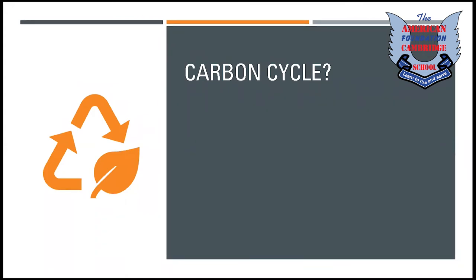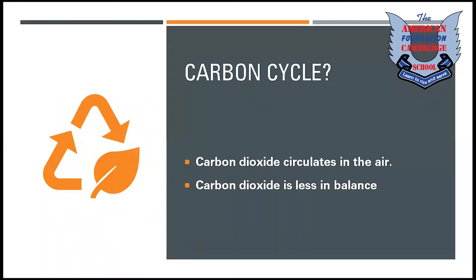Carbon cycle: carbon dioxide circulates in the air, the soil, and in living things. It is excreted by humans, animals, and factories into the atmosphere, which is consumed by green plants. Carbon dioxide is less in balance than it was 200 years ago because of the burning of oil, coal, and fossil fuels. They are burning at a very rapid rate, contributing much more carbon dioxide into the atmosphere, hence the carbon dioxide balance is disturbed compared to 200 years ago.